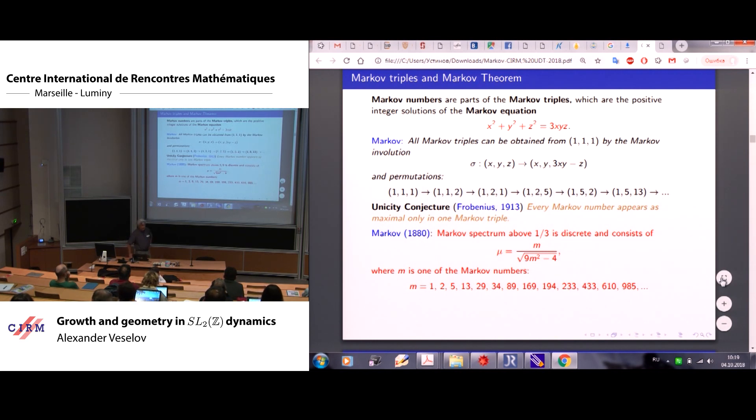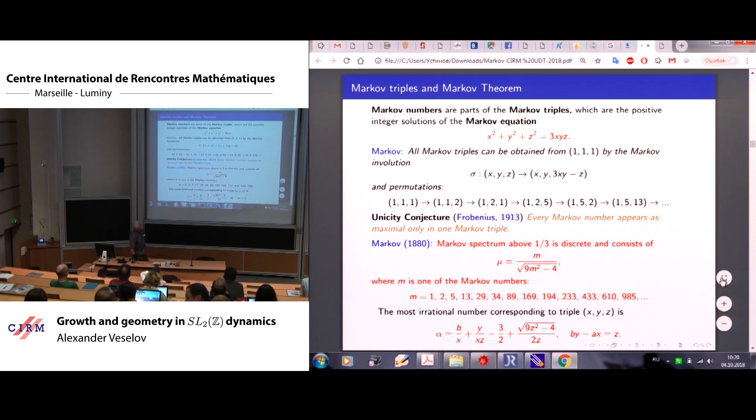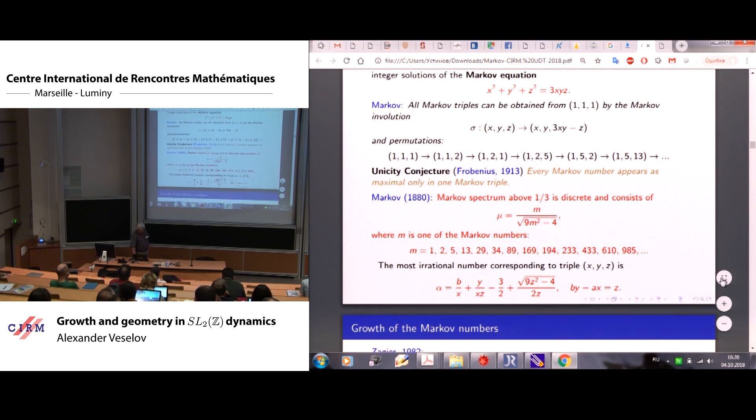So Markov spectrum above one-third is discrete. The values of this mu are discrete, so it makes sense. And they have very special form, where m is one of the Markov numbers. And Markov numbers is any number which appears in the triple. And this most irrational number, if you know the triple xyz, you can write it down explicitly. So this is the top. After one-third, it's largely open. There are some gaps known. There is a Freiman part of the spectrum which is continuous. But in general it's largely open, how to describe the spectrum below one-third. So unicity conjecture essentially claims that this discrete spectrum is simple.